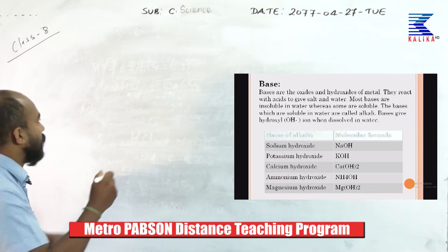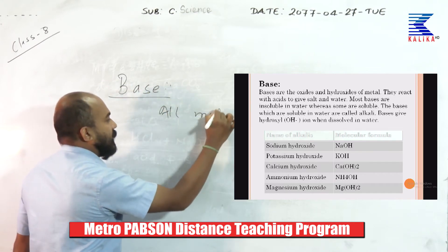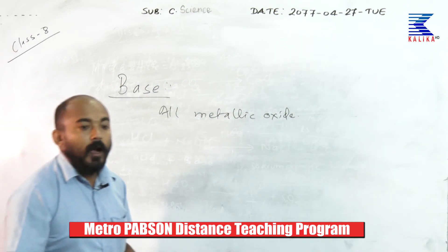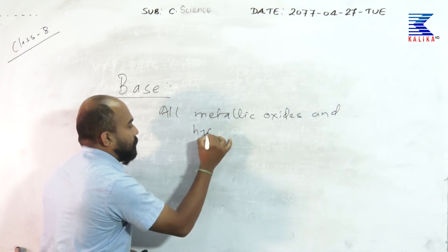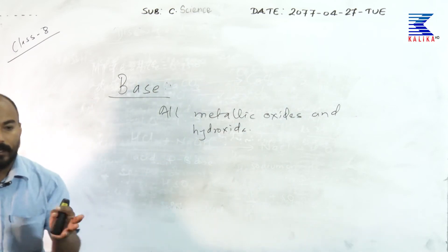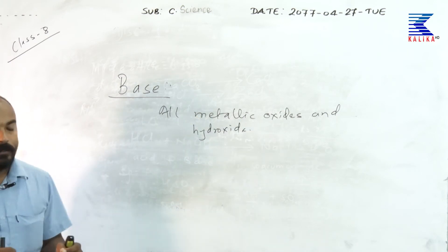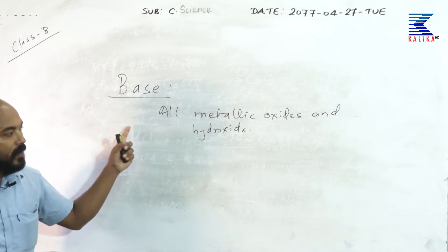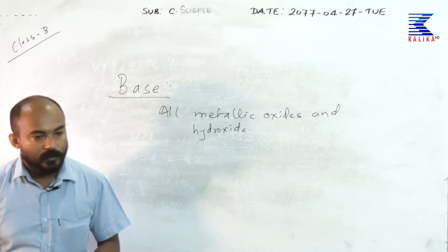The next topic is base. A base means all metallic oxides and hydroxides — all metallic oxides and hydroxides are termed as bases. In modern terms, the oxides of metals and hydroxides of metals are termed as bases. And a base, when it reacts with an acid, gives salt and water.